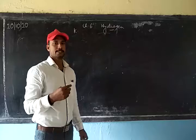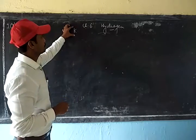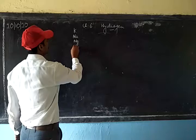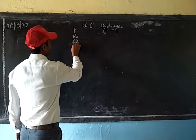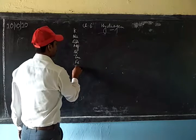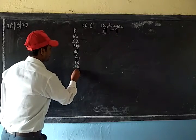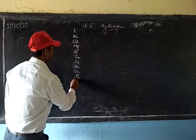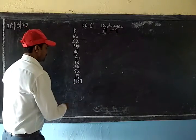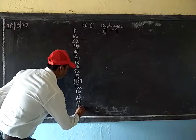We will see the reactivity series to understand how the reaction with acid takes place. We have potassium at the top position in the reactivity series because it is highly reactive. Next to it is sodium, then calcium, then magnesium, aluminium, zinc, iron, nickel, tin, lead, and then hydrogen — though hydrogen is not a metal, it is kept in this reactivity series.